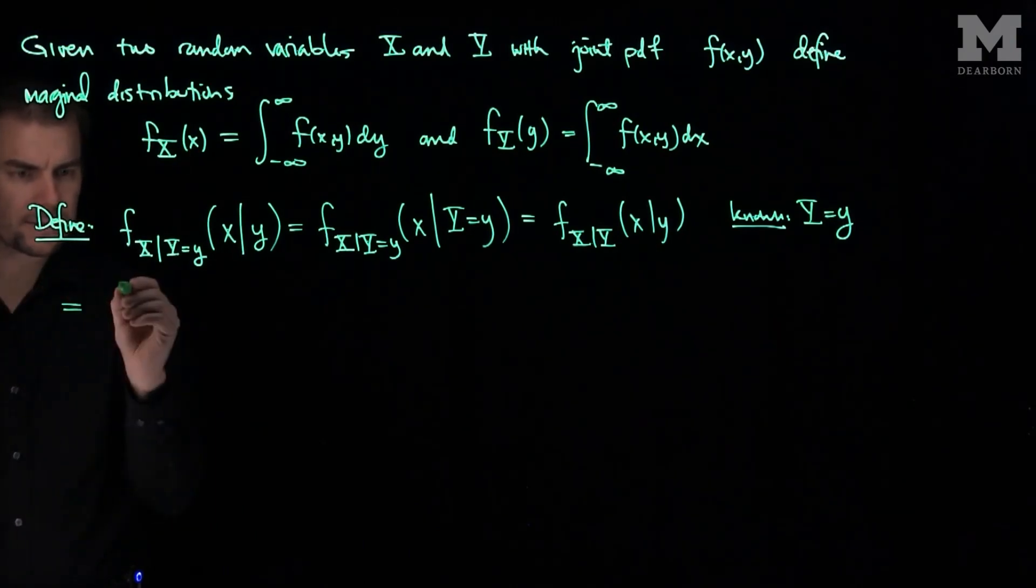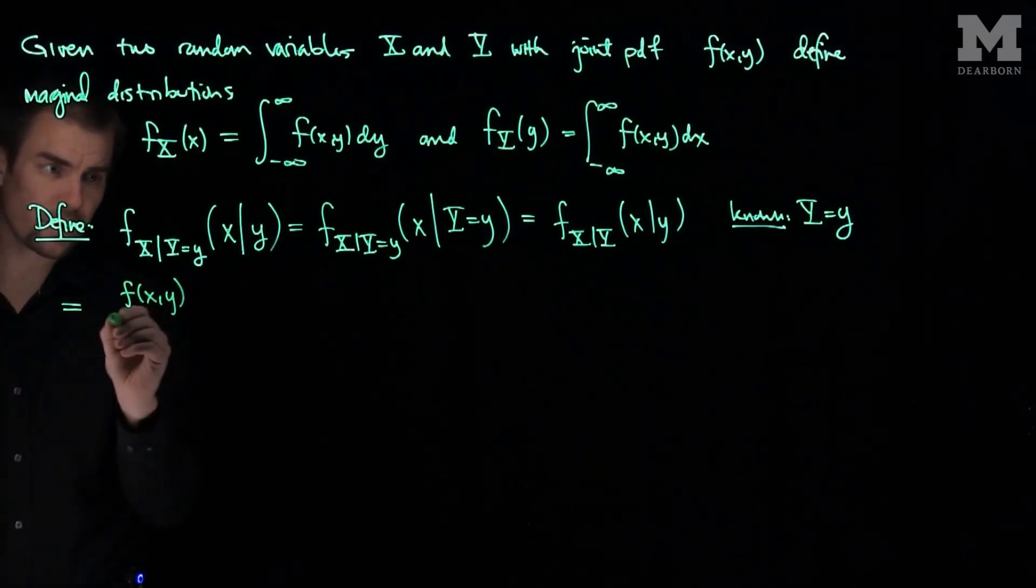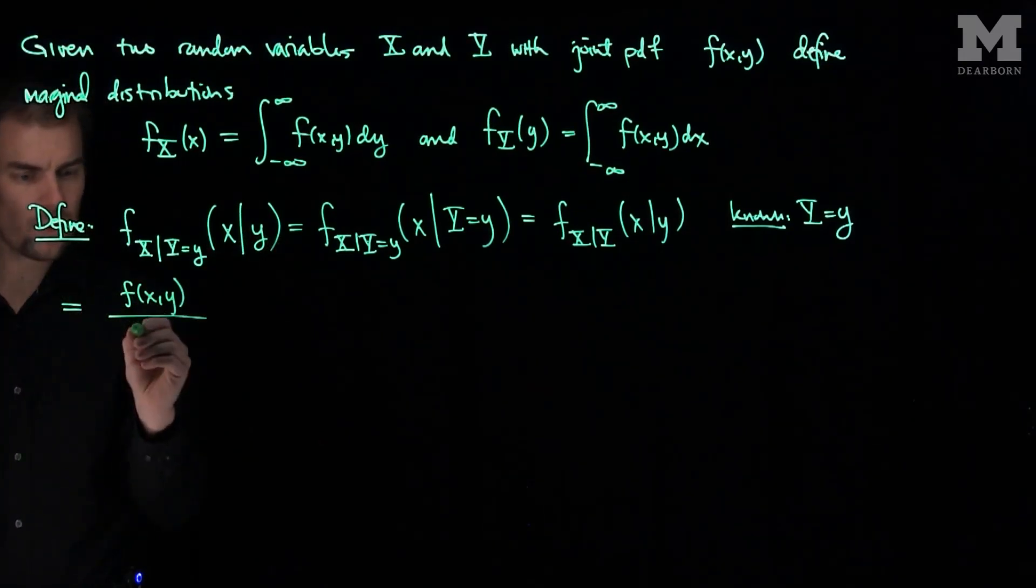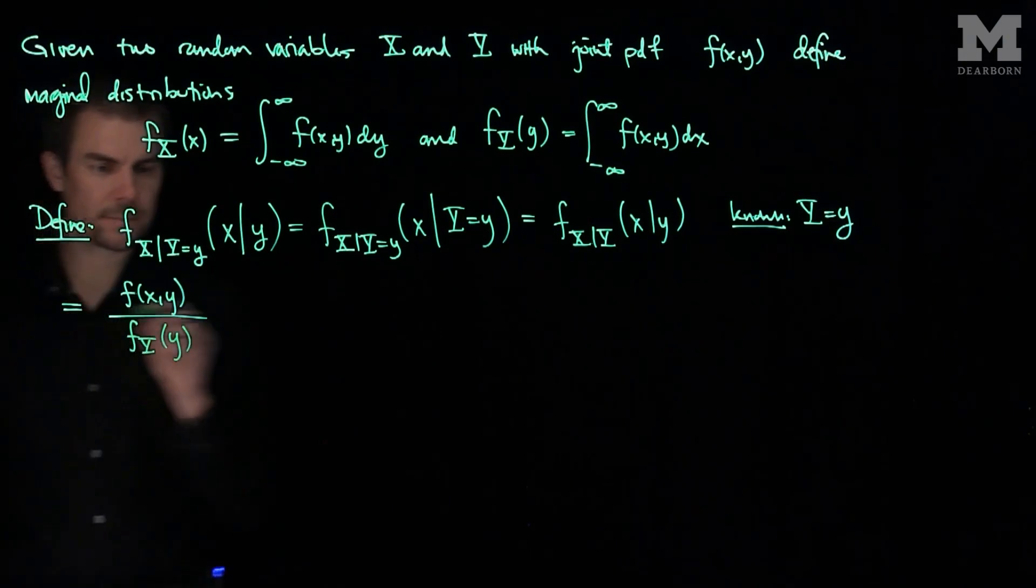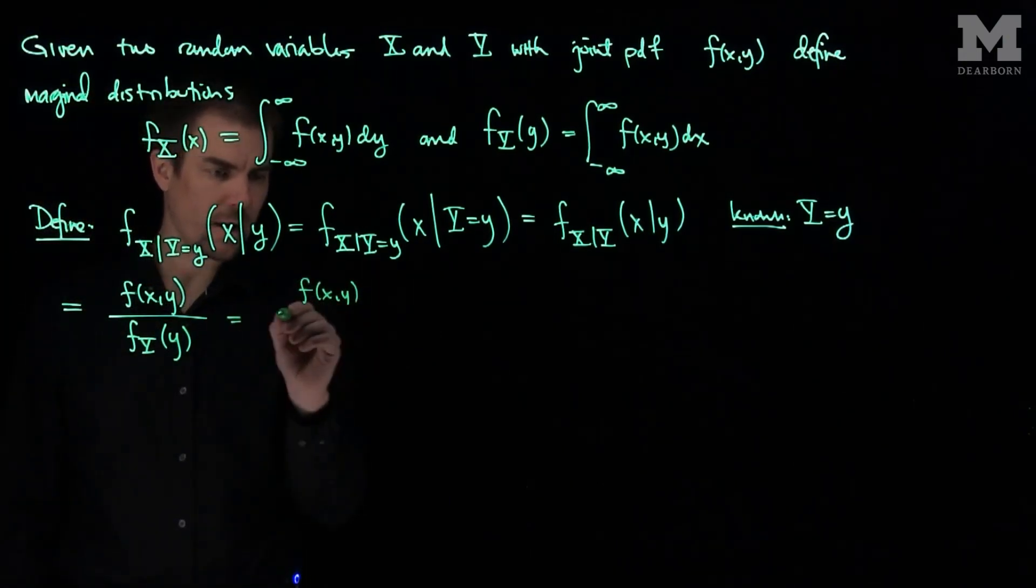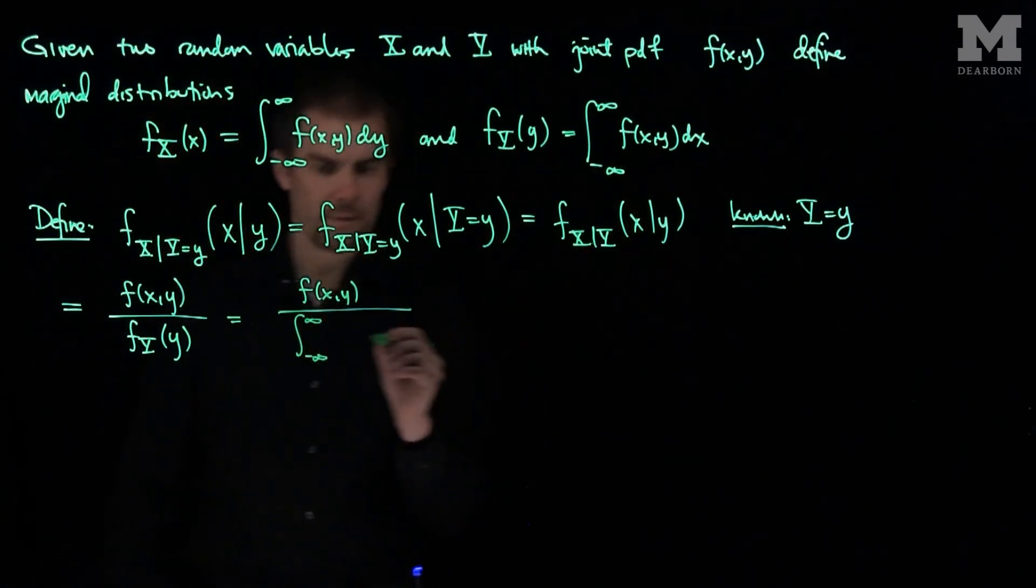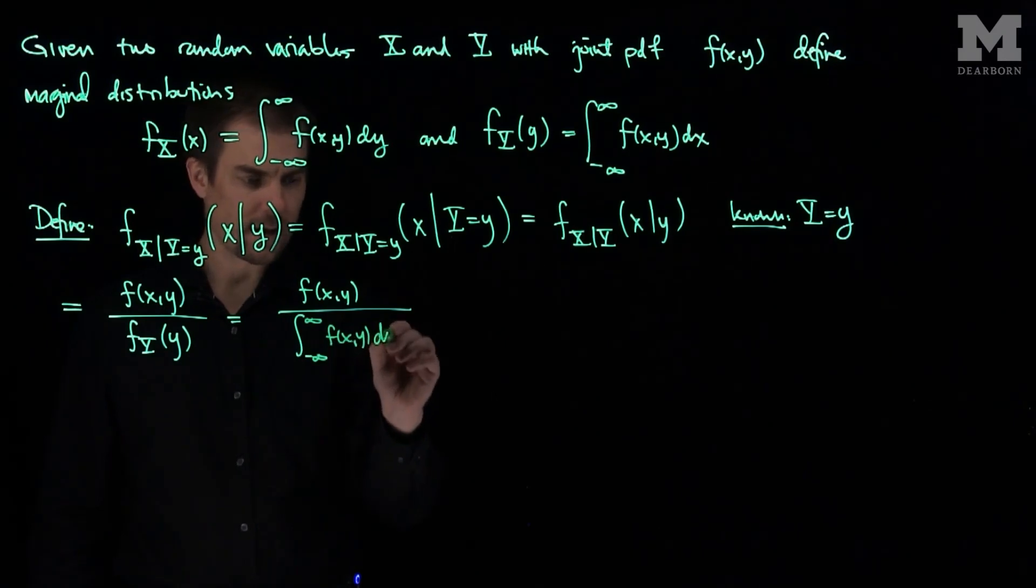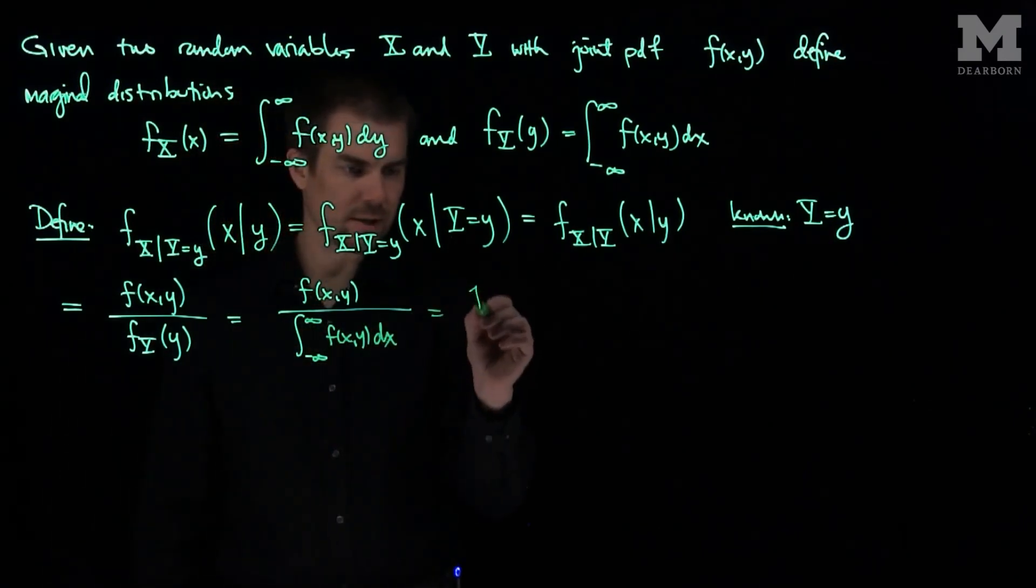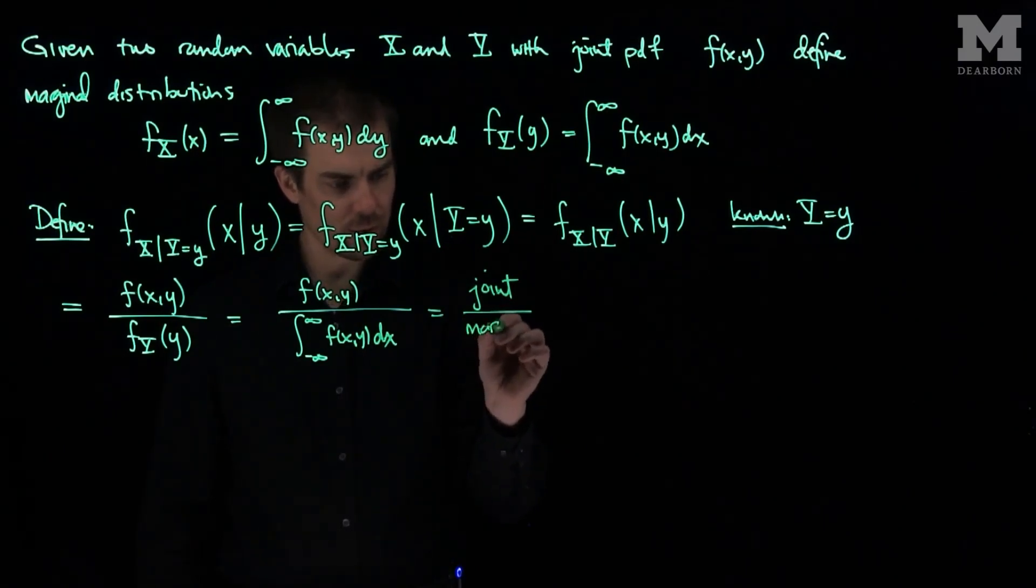We'll define it as f(x,y), the joint distribution, over f_y(y). And so what this is, is f(x,y) over the integral from negative infinity to infinity of f(x,y) dx.